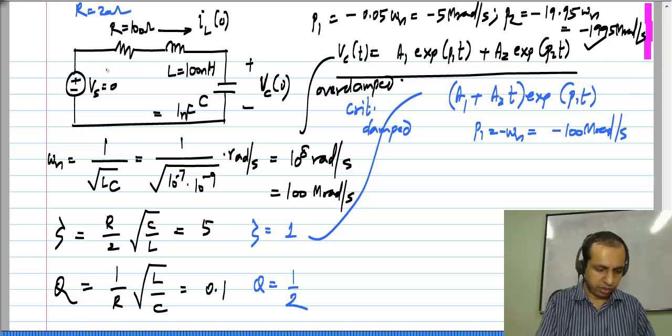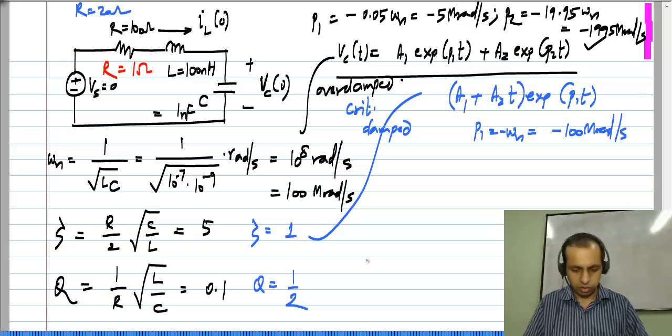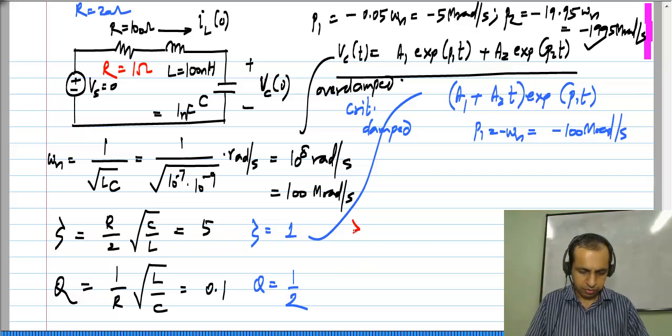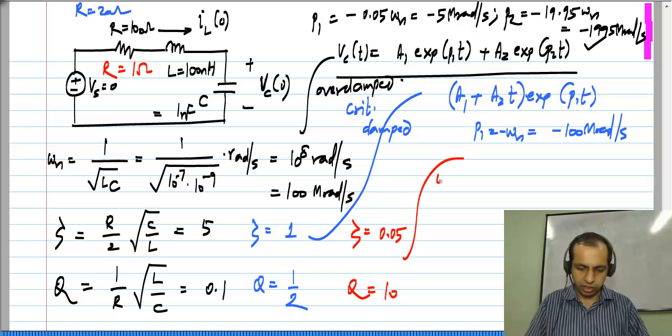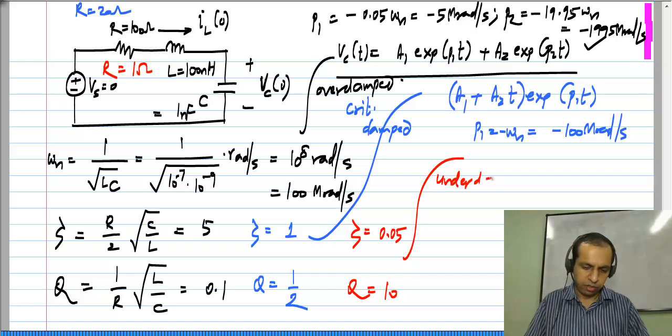And finally, I could take R to be, let us say, 1 ohm. So in this case, the damping factor would be 0.05 and the quality factor will be 10. And this is clearly an underdamped system.